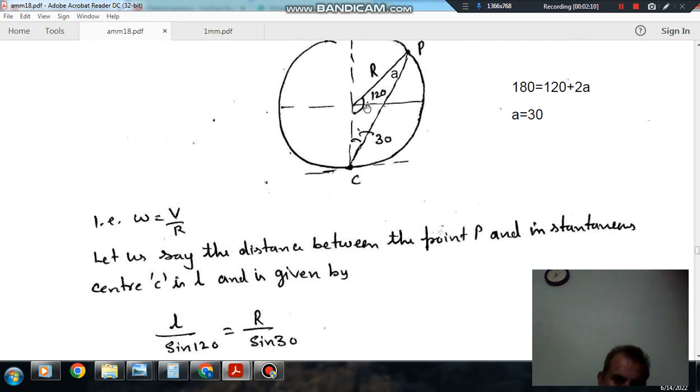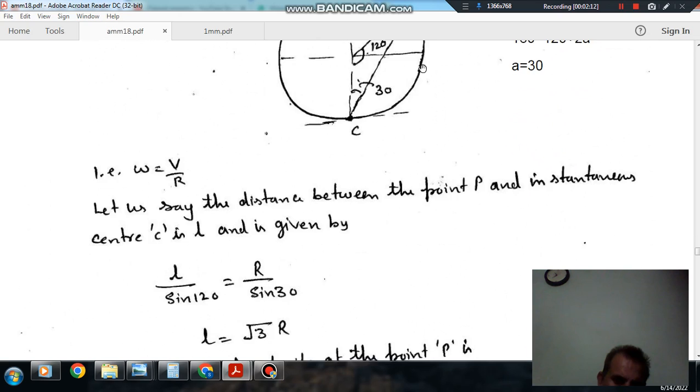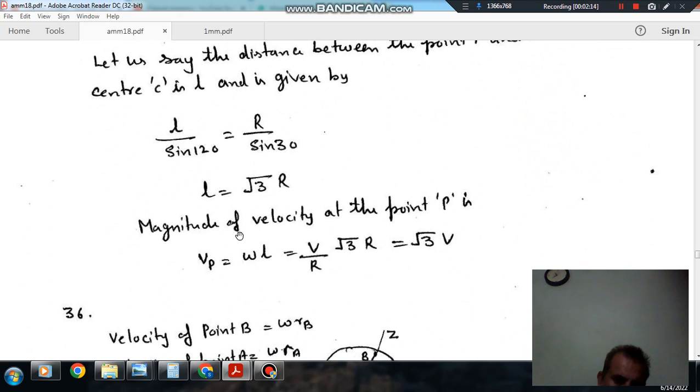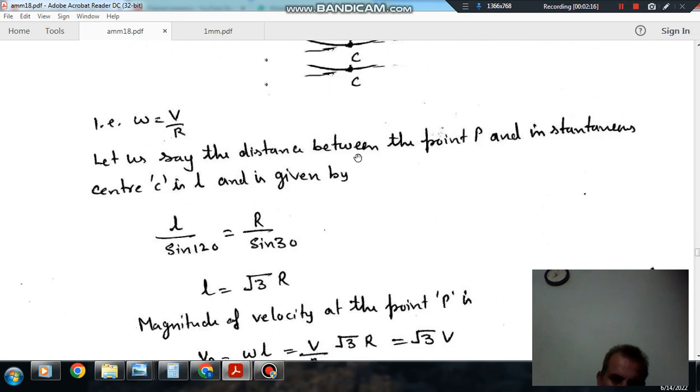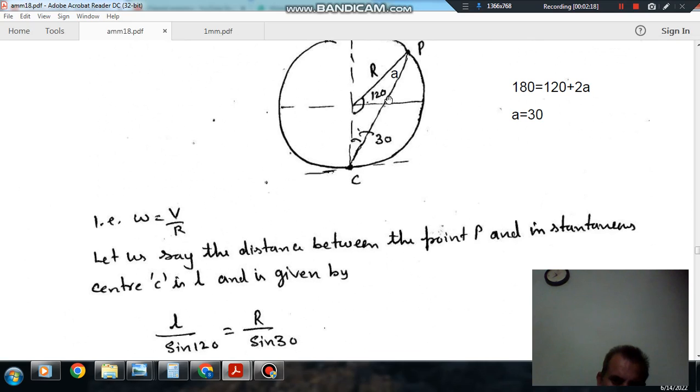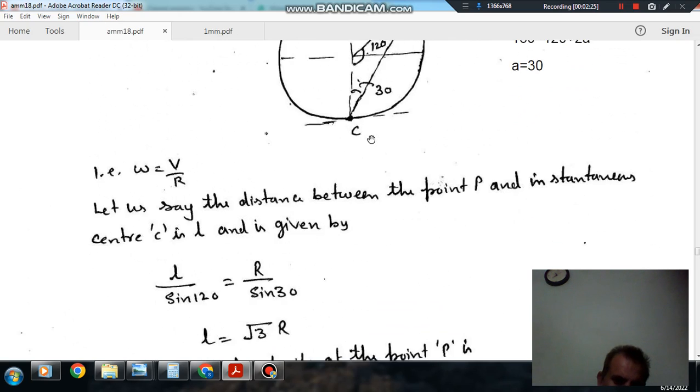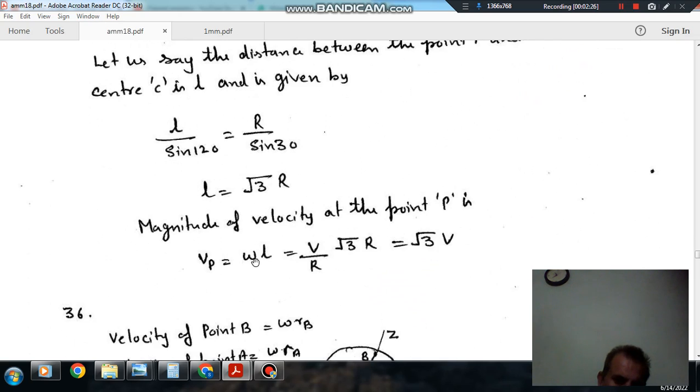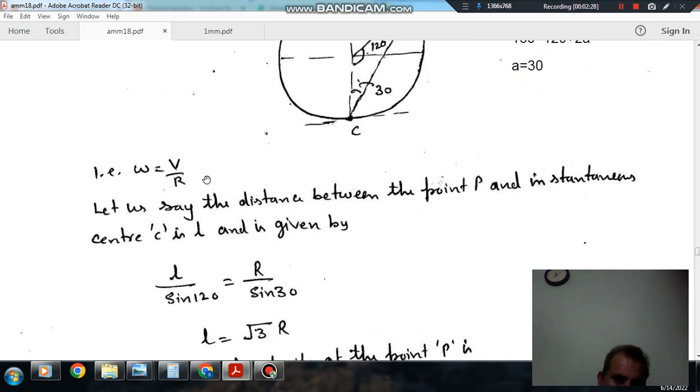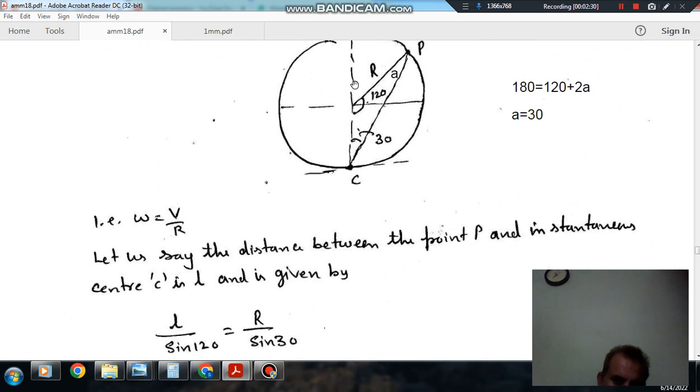And velocity of point P is ω times L, because this is the distance CP, and this is the center. So that will be ω times L, and ω is V/R because the velocity of center point of rolling is given as V. So ω will be V/R.